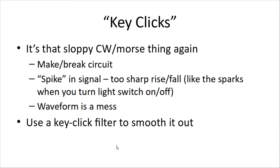Anytime the interference is key clicks, it's usually Morse or CW. When you're clicking the key, you're making and breaking a circuit — think of the noise sometimes when you play with a wall light switch and hear that little sparking noise. It's a too-sharp rise or fall, and if you look at it on a scope, the waveform's a mess. You can use a key click filter to smooth that out.